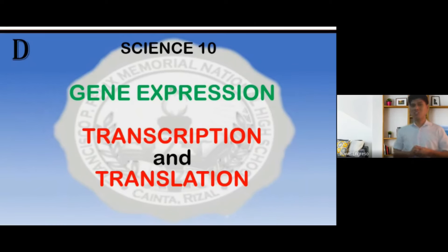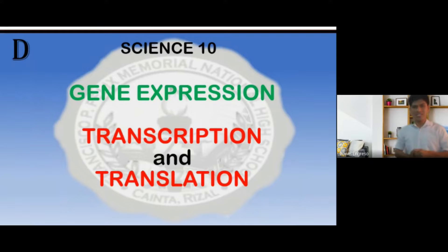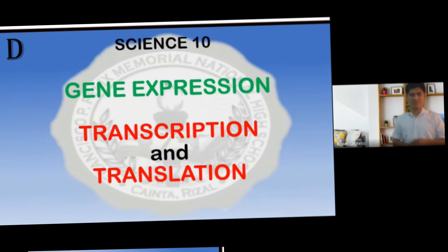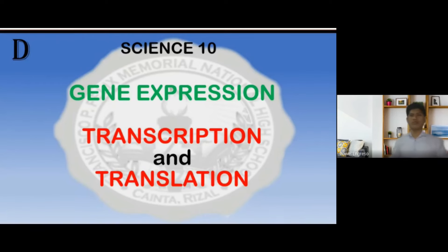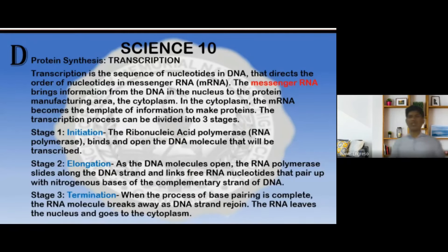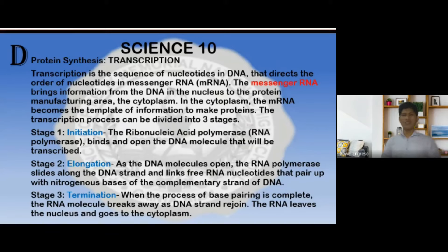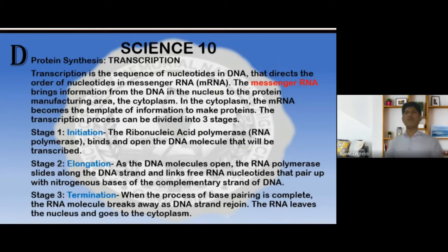Now let's move on to gene expression. Gene expression is also known as protein synthesis, and it involves two important processes: transcription and translation. Transcription is the sequence of nucleotides in the DNA that directs the order of nucleotides in messenger RNA, or mRNA. The messenger RNA brings information from the DNA in the nucleus to the protein manufacturing area — the cytoplasm. In the cytoplasm, the mRNA becomes the template of information to make proteins.